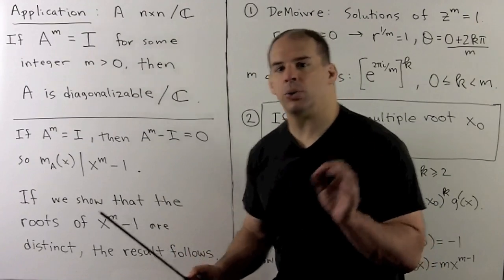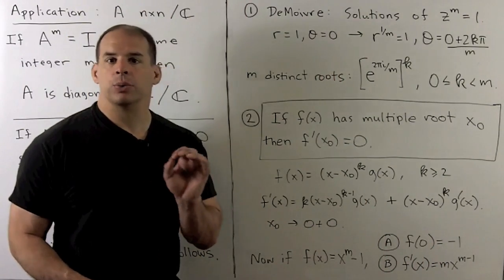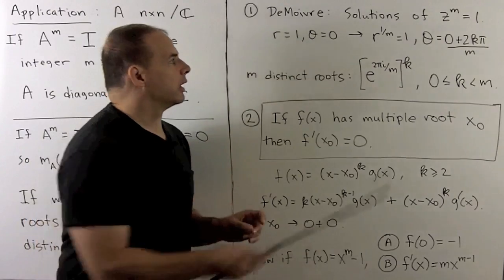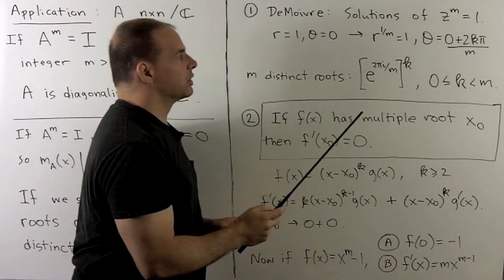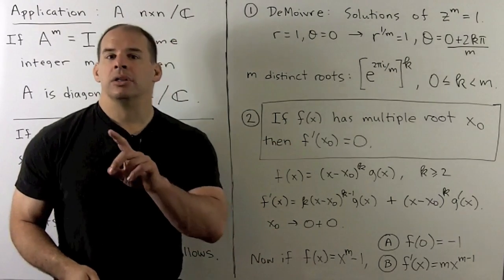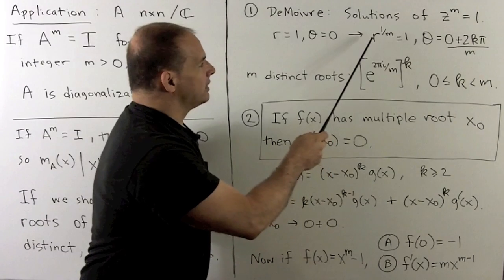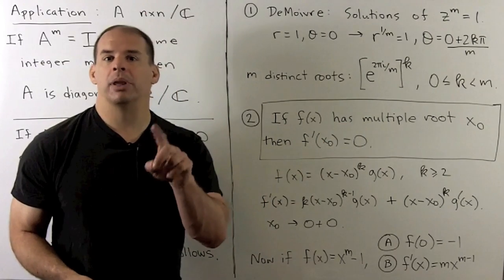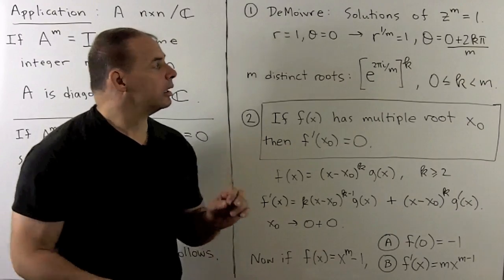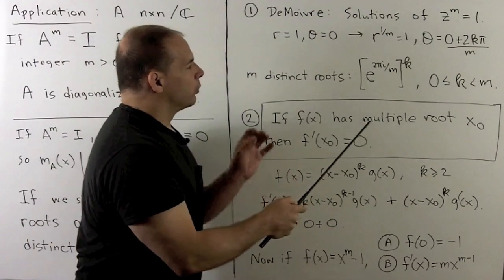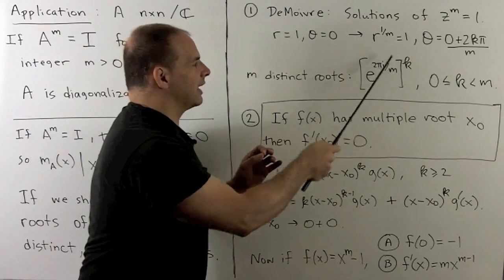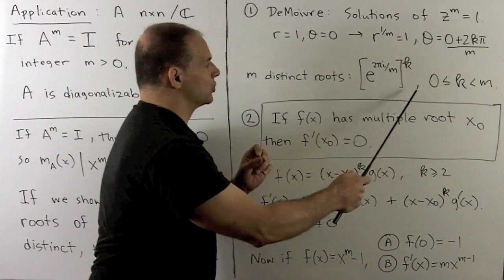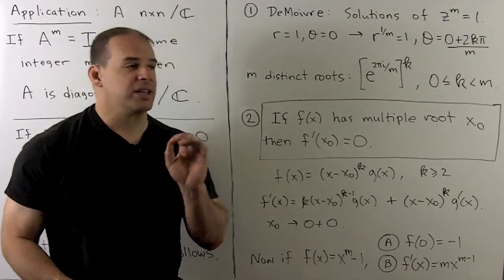There are two ways to show x to the m minus one has distinct roots. First, directly using De Moivre's theorem: writing one in polar coordinates with r equal to one and theta equal to zero, the mth roots give e to the two pi i over m raised to the kth power, for k between zero and m minus one. That gives m distinct roots.